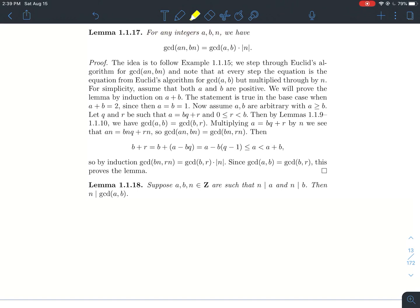It says that for any integers a, b, and n, the GCD of an times bn should be the same thing as the GCD of a, b times the absolute value of n. In particular, you'd like to be able to factor this n outside, just make sure it's the absolute value of n.